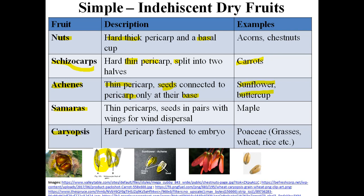In samaras, they have a thin pericarp but a very peculiar character: the fruits have wings, and these wings help the fruits to disperse with the help of the wind. They are evolved for wind dispersal. An example is maple — in the picture we can see that they have two wings so the fruits can easily disperse with the help of the wind.